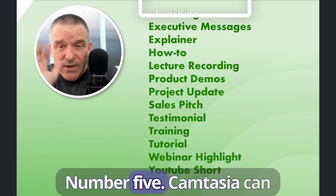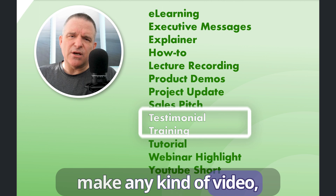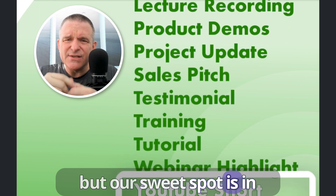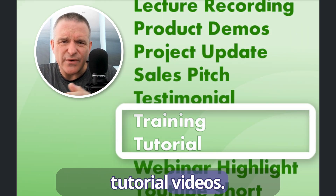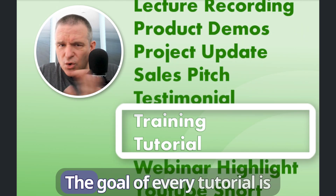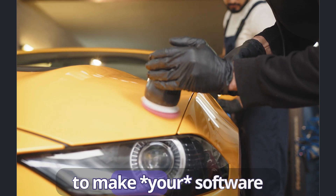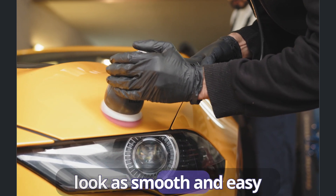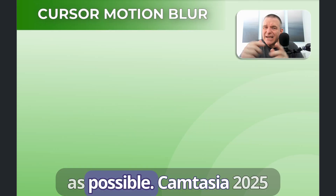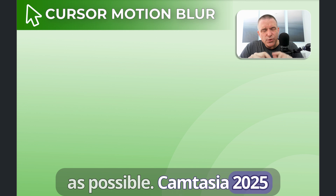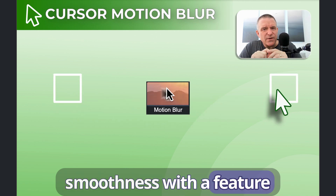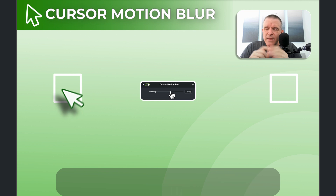Number five. Camtasia can make any kind of video, but our sweet spot is in making training and tutorial videos. The goal of every tutorial is to make your software look as smooth and easy as possible. Camtasia 2025 adds a much needed smoothness with a feature called cursor motion blur.